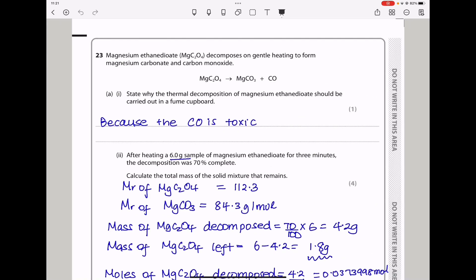Question 23. Magnesium ethane-di-oate decomposes on general heating to form magnesium carbonate and carbon monoxide. Part A says why the thermal decomposition of magnesium ethane-di-oate should be carried out in a fume cupboard. If you observe this reaction, carbon monoxide is produced, and we know this gas is toxic, so this should be carried out in a fume cupboard.